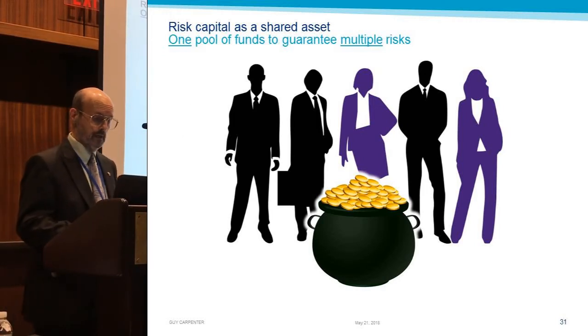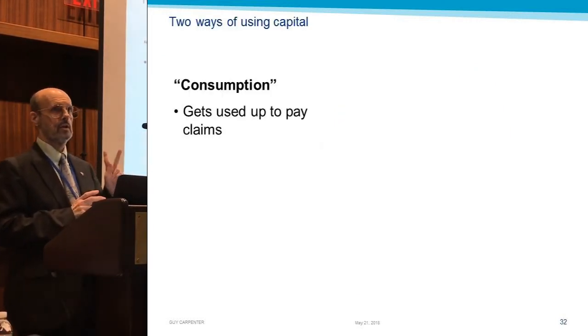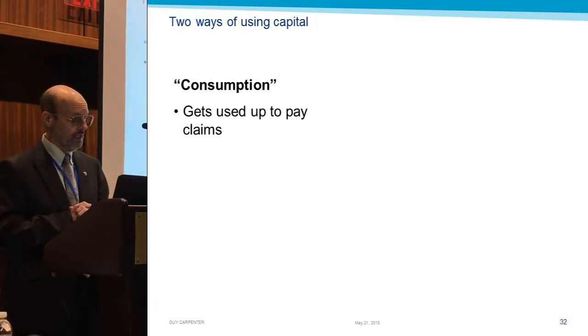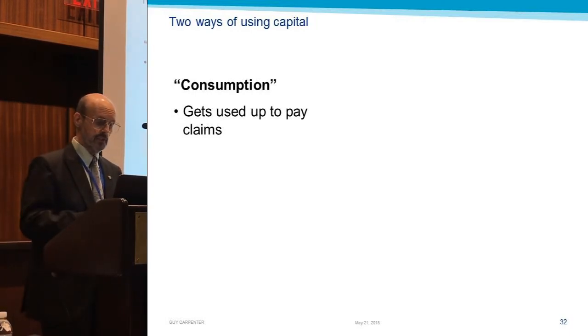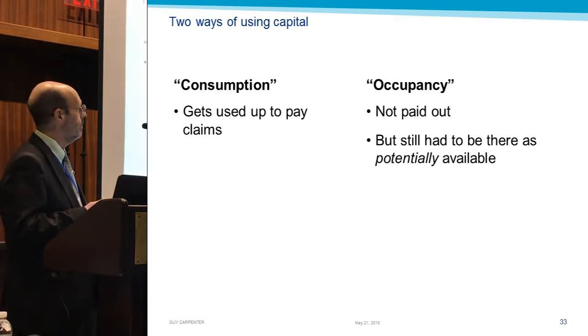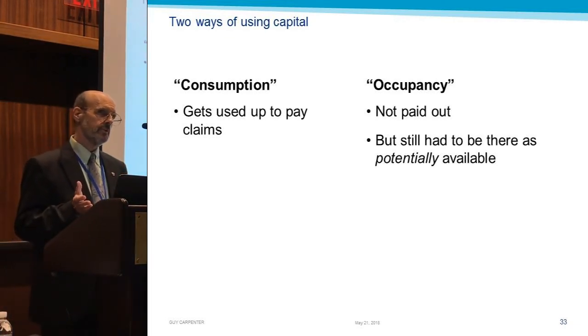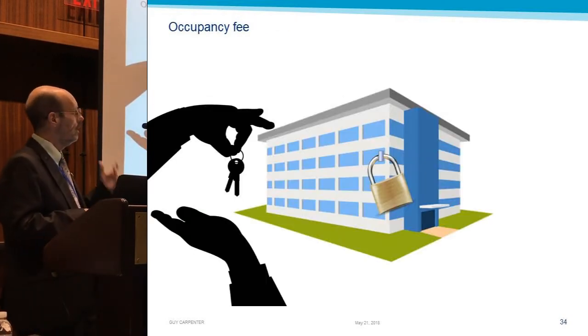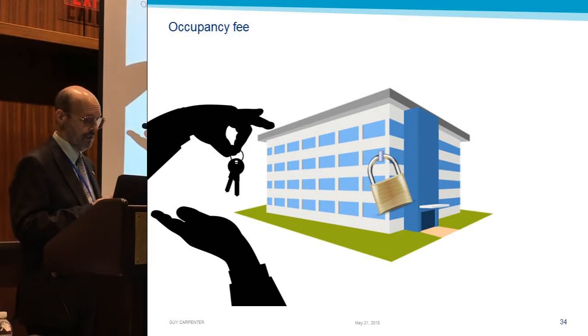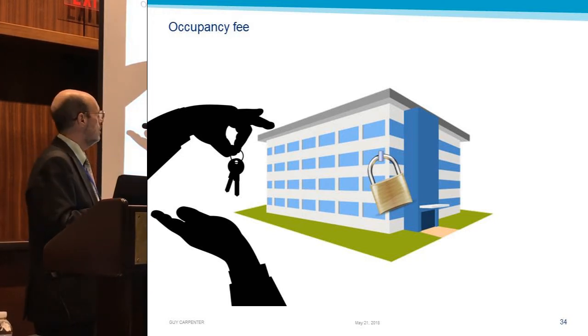I want to focus on the other interesting thing he had to say, is that there are two ways of using capital. One of them is called the consumption use, and that is money gets used to pay claims. But there's another use, is that some money might not be used to pay claims but it was still there. It still served a purpose. It was there potentially to be used. It was backing the risk. So we have two distinct uses, and here's the analogy of a hotel. A hotel room is occupied. There's an opportunity cost. You can't do something else with it.